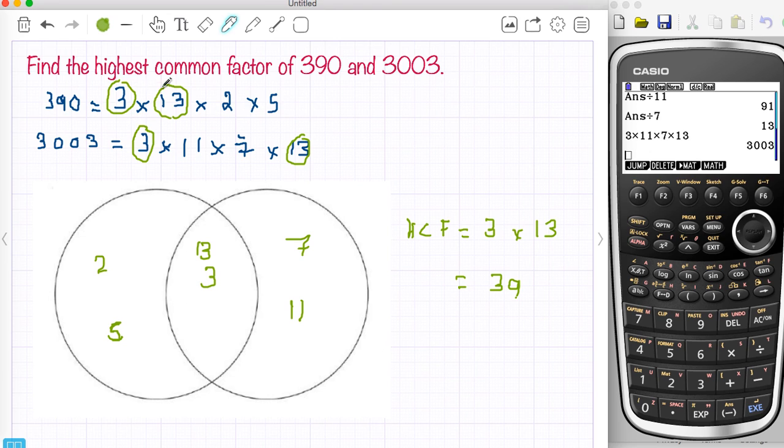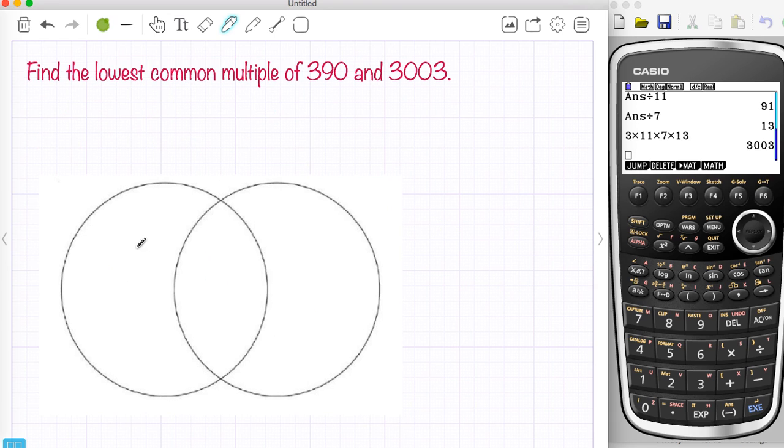I'm also now going to look at the lowest common multiple and it's the same thing. I need these numbers into a Venn diagram. So if I go over to this page I'm just going to put these numbers into a Venn diagram. 3, 13 and 7 and 11. So they're the same numbers, the same Venn diagram.